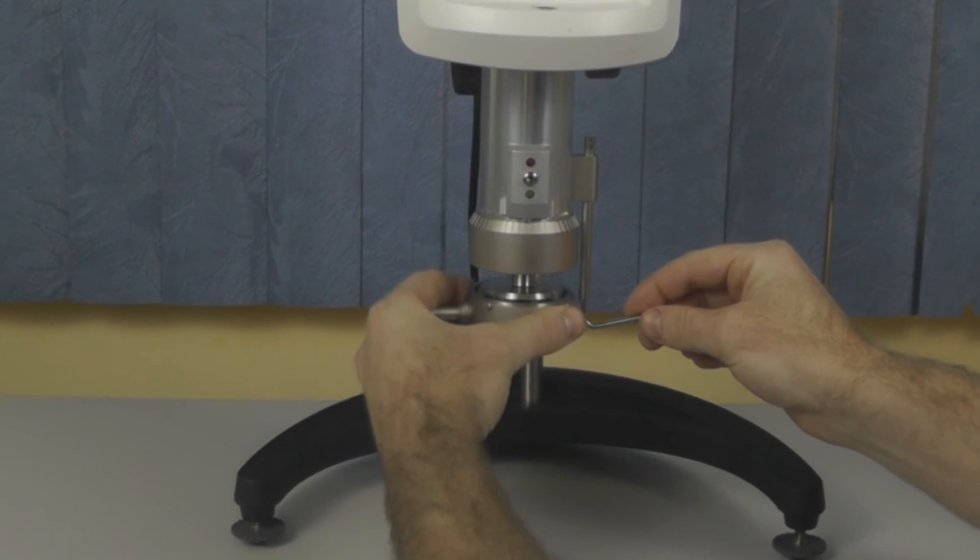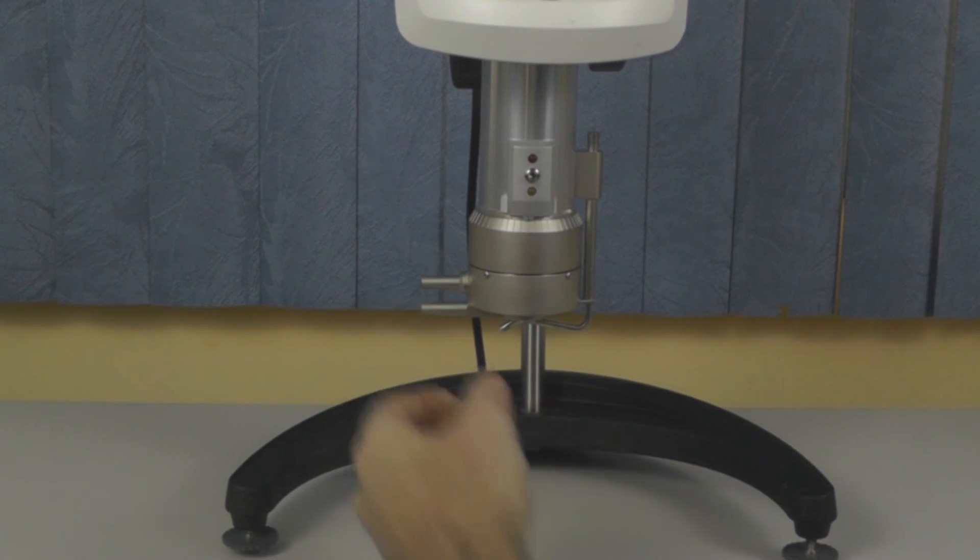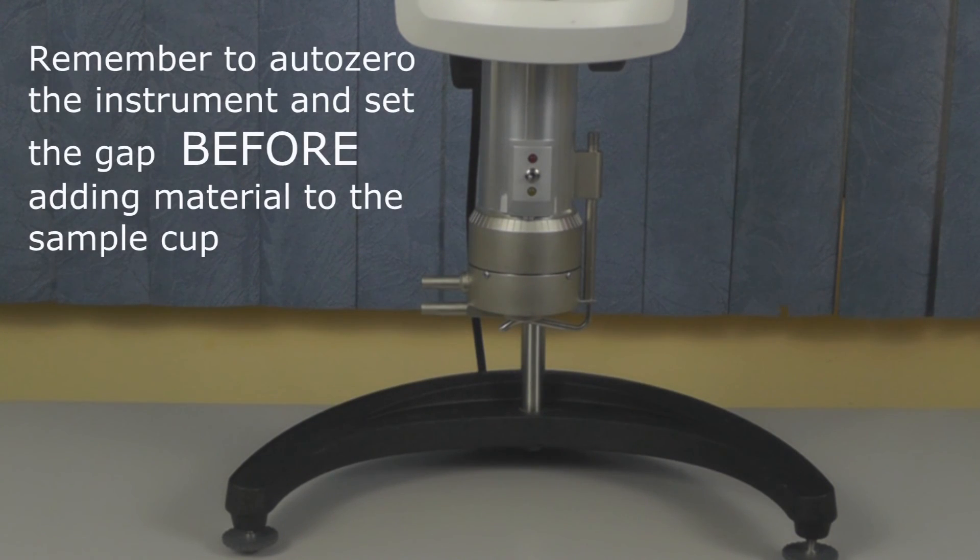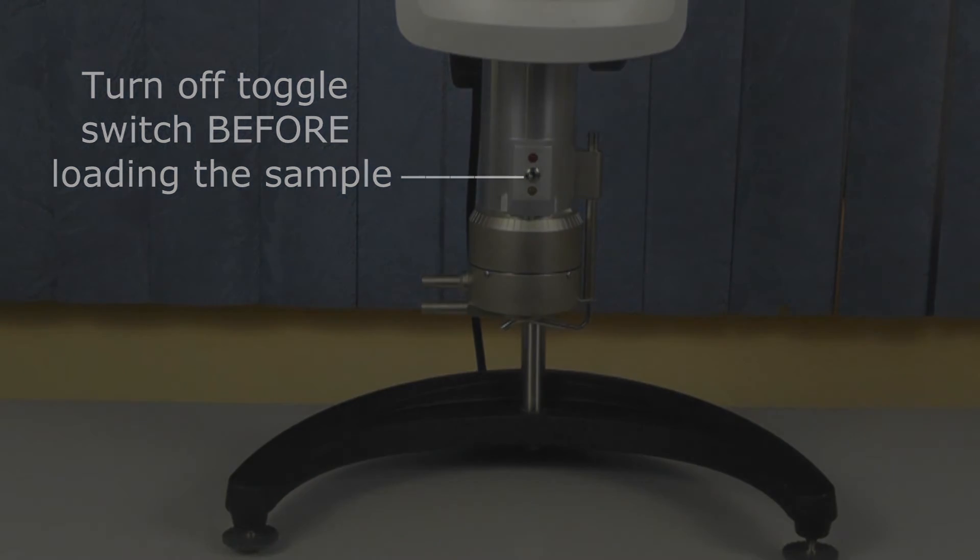As long as you have not compromised the position of the micrometer, the gap will not change and your sample will be ready to test. Remember to set this gap before loading your material onto the sample cup. It is also important to turn off the toggle switch after the gap has been set as the electric current may have an effect on the sample.